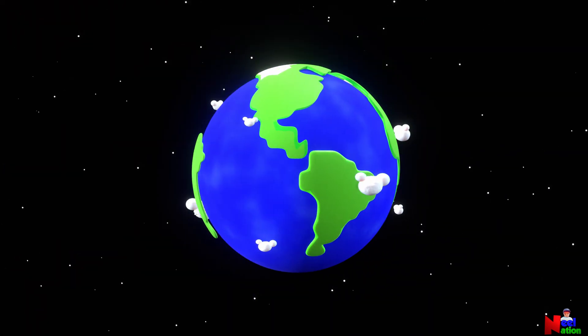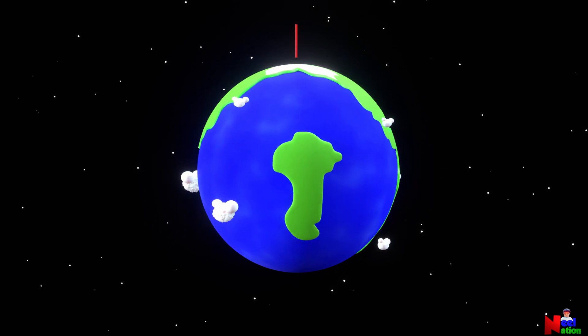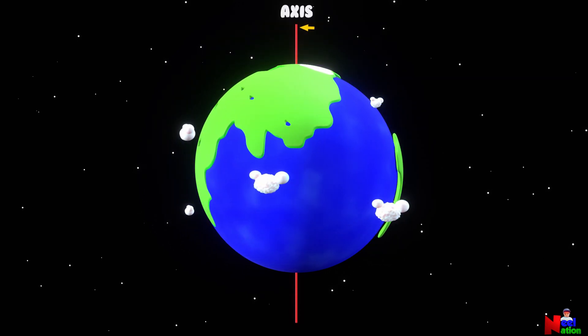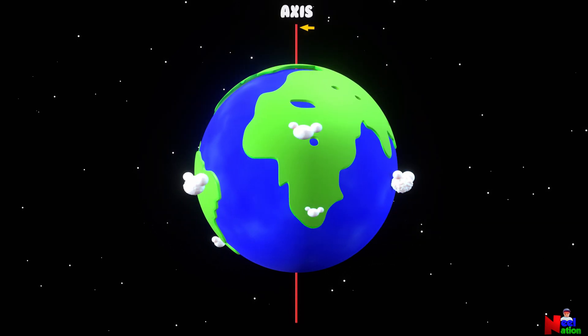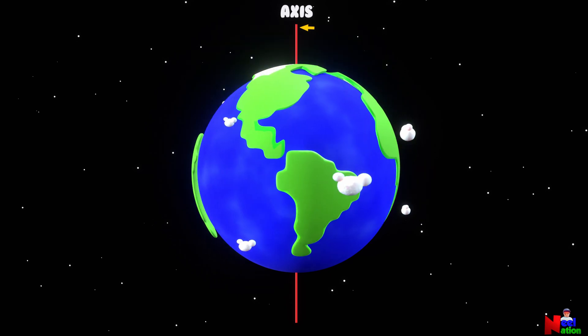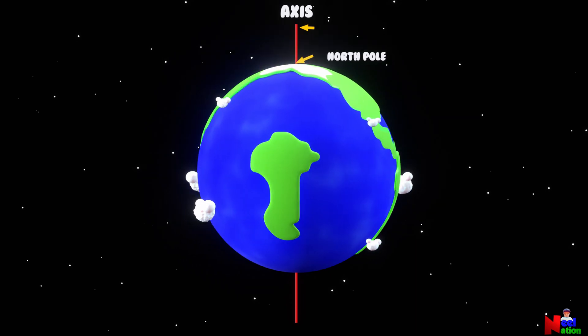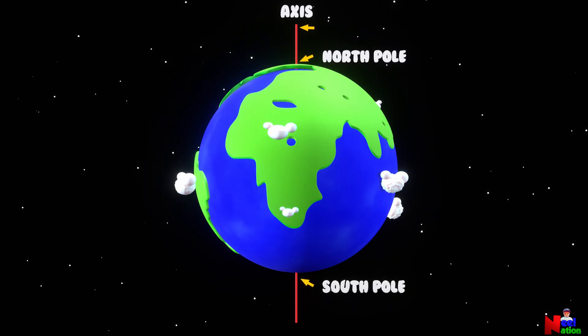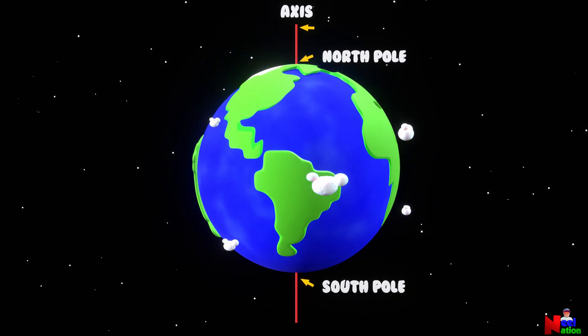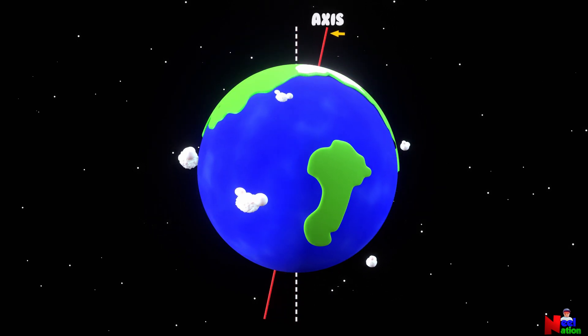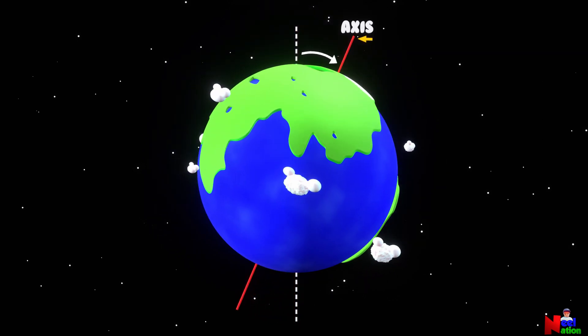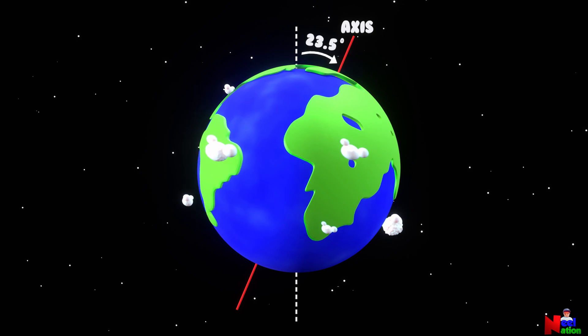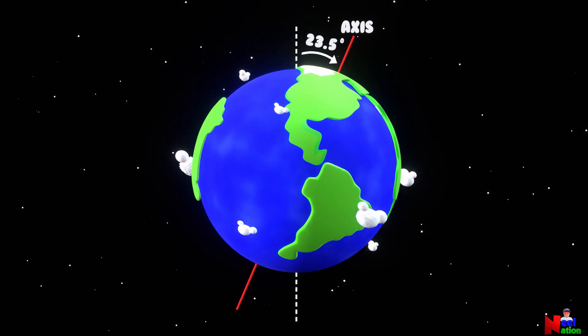Our Earth actually spins on an axis. An axis is an imaginary line passing through the center of the Earth from North Pole to South Pole. And the axis of Earth is tilted. The Earth sits at an angle of 23.5 degrees.